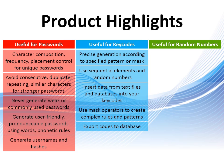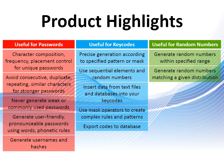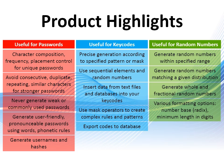Random number generation options include: generate random numbers within a specified range, generate random numbers matching a given distribution, generate whole and fractional random numbers, and various formatting options including number base and minimum length in digits, as well as the ability to generate negative random numbers.